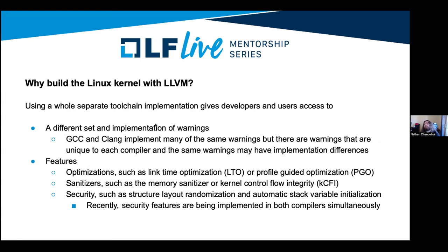Why would you even want to build the kernel with LLVM when GNU already works? The real benefit of having a whole separate toolchain implementation is that you get a different set and implementation of warnings and features. Because they're not the same, you have the freedom to implement different warnings or enhance ones that GCC might have implemented. For example, with GCC the 'unused but set variable' warning won't warn if a unary operator like post-increment is used, whereas Clang will warn in that situation.